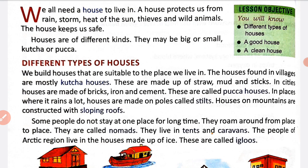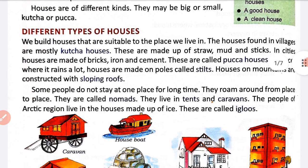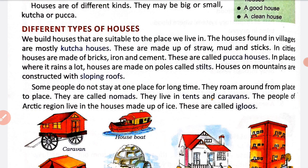We build houses that are suitable to the place we live in. Us place ke accordingly hum house banate hai. The houses found in villages are mostly kaccha houses. These are made up of mud and sticks. Joe houses gaun mein banai jate hai, mostly kahlate hai kaccha houses, aur inhe banane ke liye straw, mud aur sticks ka use kia jata hai. In cities, houses are made up of bricks, iron, and cement — these are called pakka houses.